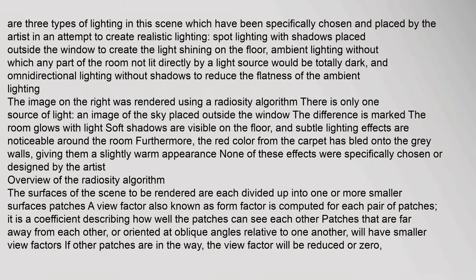There are three types of lighting in this scene which have been specifically chosen and placed by the artist in an attempt to create realistic lighting: spot lighting with shadows placed outside the window to create the light shining on the floor; ambient lighting, without which any part of the room not lit directly by a light source would be totally dark; and omnidirectional lighting without shadows to reduce the flatness of the ambient lighting.